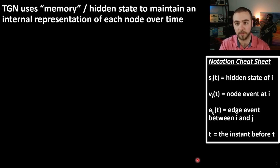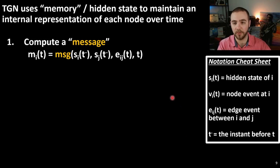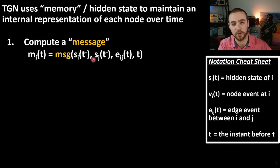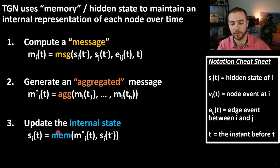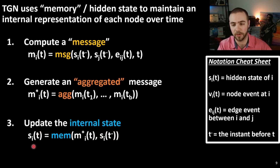Here is the specific notation the paper uses. We compute message m_i(t) as a function of the previous internal state of node i, the previous internal state of neighbor node j, any interactions between these neighbors, and the current time t. We then generate an aggregated message m* using some aggregation function — for example, taking an average over all messages. Finally, we update the internal state using this memory function, which depends on the aggregated message from step two and the previous internal state, to produce the updated internal state for the next step.